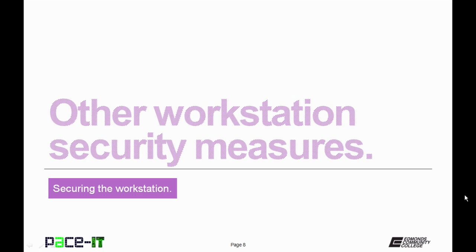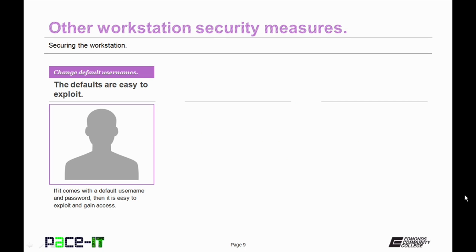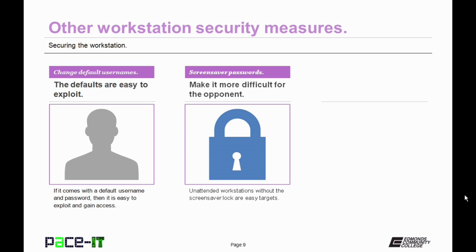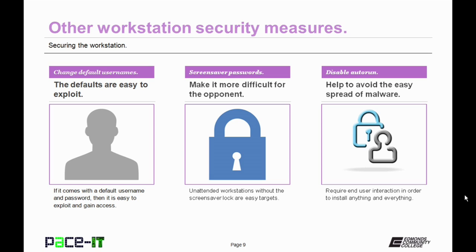Now let's move on to other workstation security measures. The first topic under this heading is that your policy should be to always change the default username and password. Defaults are easy to exploit — if it comes with a default username and password, it can be looked up and you could be exploited. You should also have a policy in place that requires screensavers with password locks. This makes it more difficult for somebody to walk up to an unused workstation and get into your system. And as a policy, all of your workstations should have the auto-run feature disabled. This helps to avoid the easy spread of malware, as it requires that the user actually interact with the workstation to install software and applications.